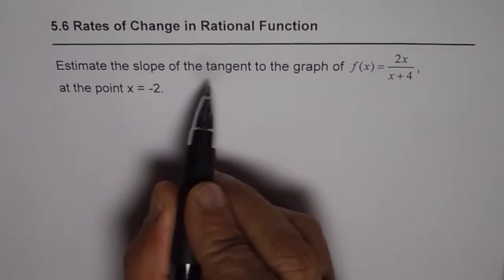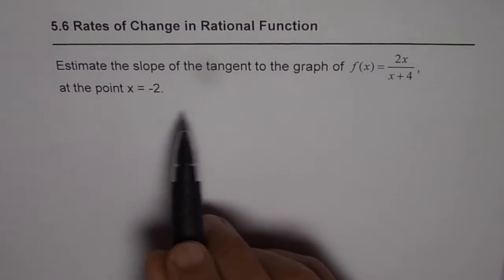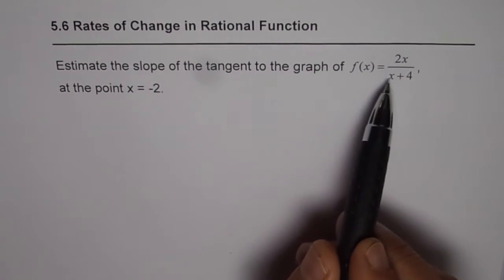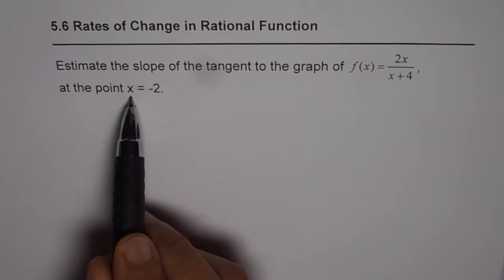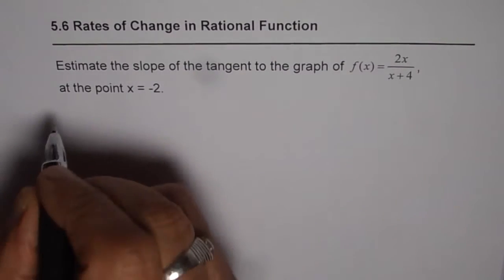Slope of a tangent really means instantaneous rate of change at a given point. So the function is f(x) = 2x/(x+4). Point given to us is x = -2, so let us find what is the value of the function at -2.